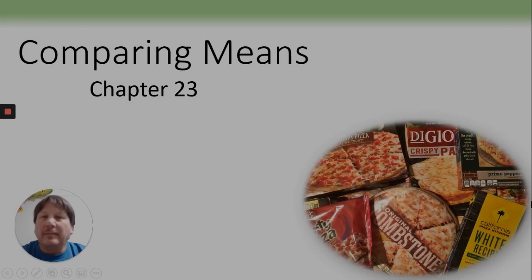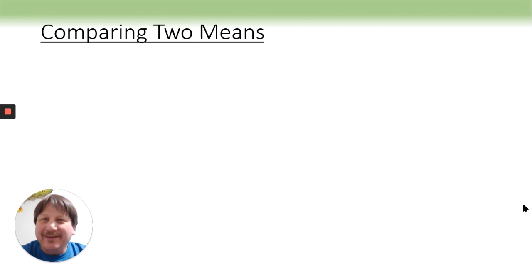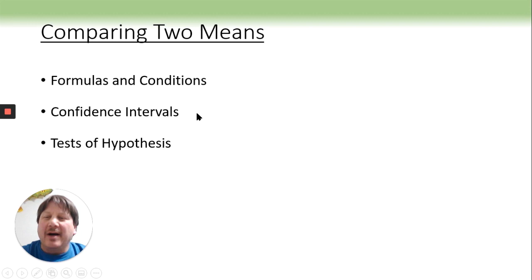Hello, AP Statistics, and welcome to Comparing Two Means for Chapter 23. Frozen pizza? Yeah, I don't eat frozen pizza. We have four things that we want to hit real quick: our formulas and conditions, confidence intervals, test of hypothesis, and then at the very end we need to talk a little bit about pooling.